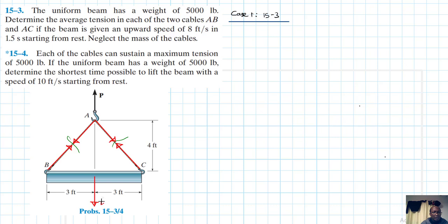So we label: this is W, this is T, and this is T. This particular system is accelerating — its velocity changes from 0 to 8 — therefore the tension in the cables will increase, as opposed to if the beam were at rest or in uniform motion.